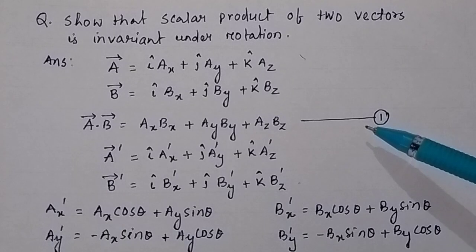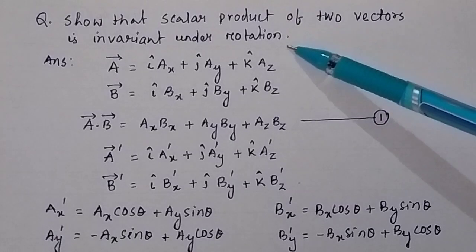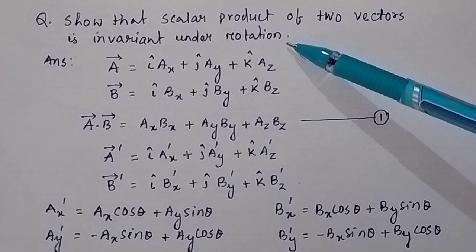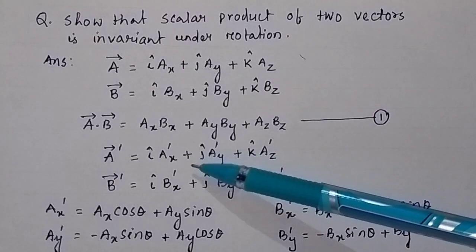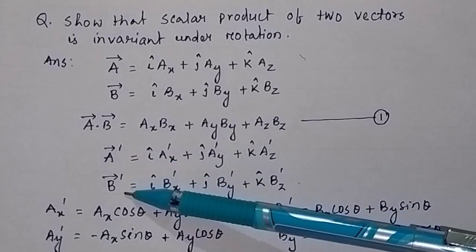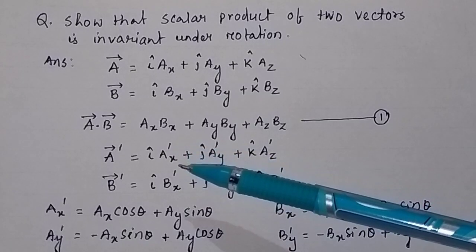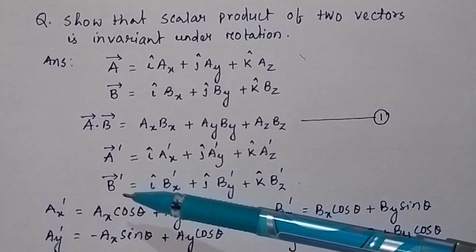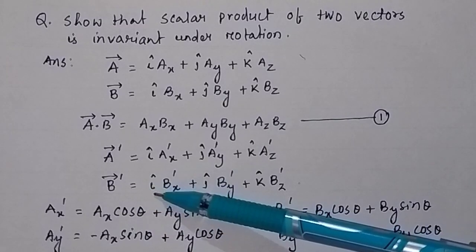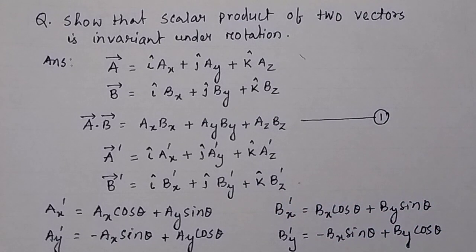Suppose this is equation number 1, and in the question it is given that we have to show the scalar product of two vectors is invariant under rotation. Suppose the vector rotates about the Z-axis. Then after rotation at an angle theta, the vectors will be A-prime and B-prime, where A-prime equals i-cap AX-prime plus j-cap AY-prime plus k-cap AZ-prime, and B-prime equals i-cap BX-prime plus j-cap BY-prime plus k-cap BZ-prime.